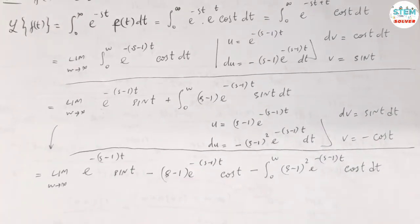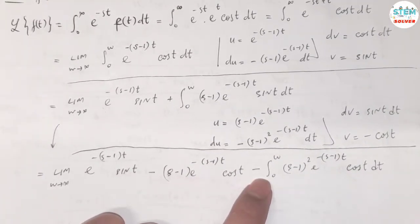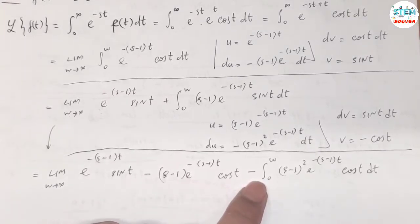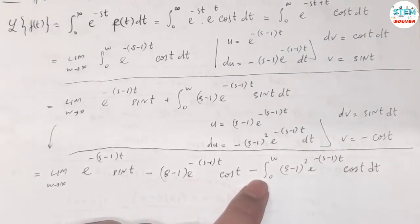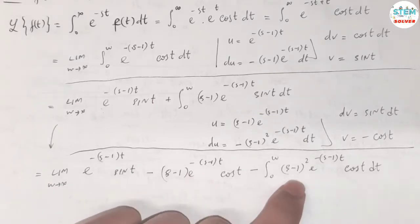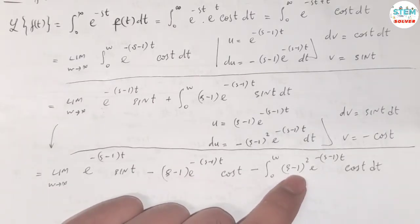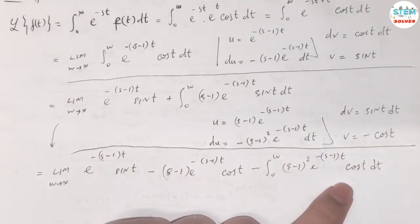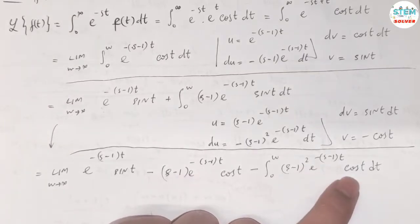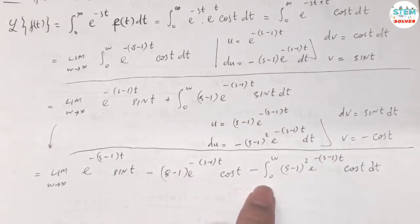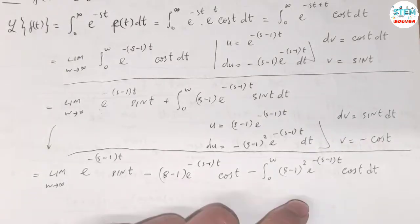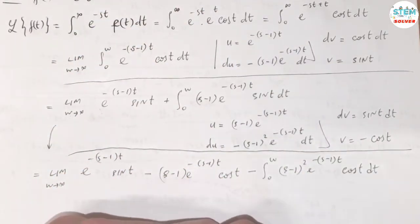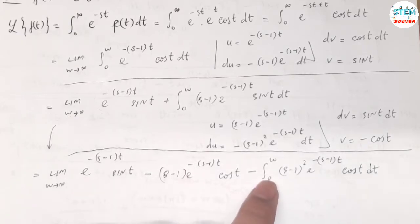We still have the integral here. If you were to integrate this again, you would get sine, and then you'd still have an integral. Integrate it again and you get back to cosine. So you just go back and forth between sine and cosine — it would never let you get rid of the integral.